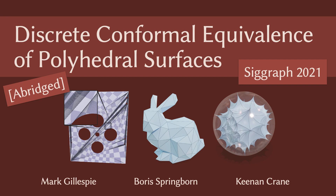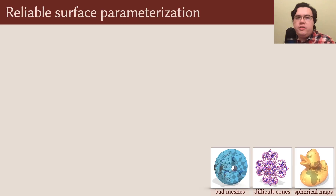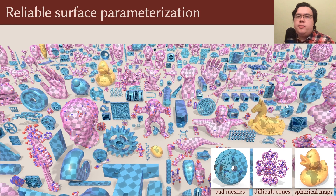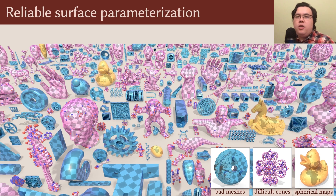Hi, I'm Mark. Today I'll discuss how a classic theorem from differential geometry can help us robustly parameterize meshes. We introduce a new algorithm for surface parameterization that succeeds on low-quality input geometry and complex cone configurations, and also computes maps to the sphere.